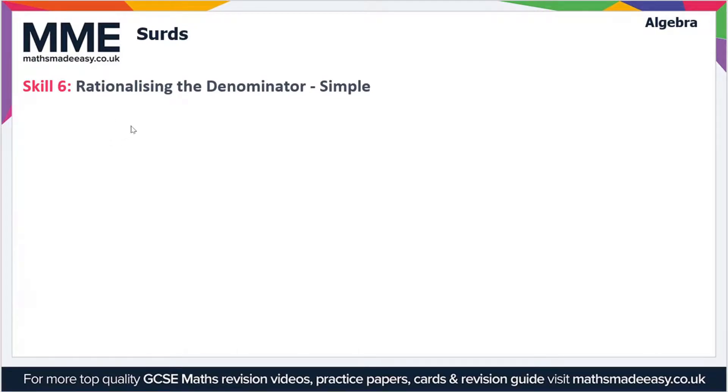But we'll start off looking at the more simple example. So if we have a over root b, so here we've got a surd on the denominator. We want to rewrite this expression in a form where we don't have the surd on the denominator.